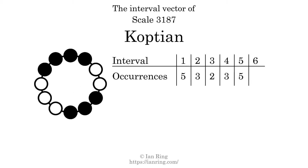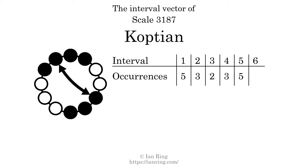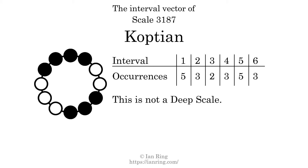There are 5 intervals with the size of 5 semitones; they are here, here, here, here, and here. There are 3 intervals with the size of 6 semitones; they are here, here, and here. Each interval does not appear in this scale a unique number of times, so this is not a deep scale.